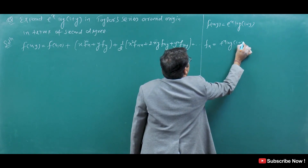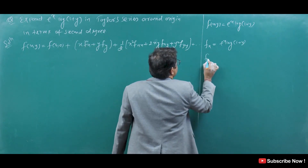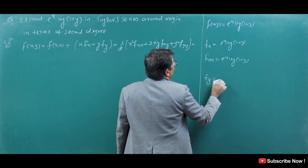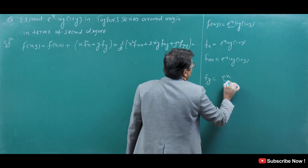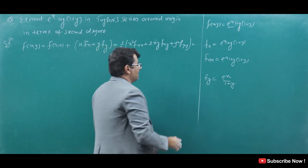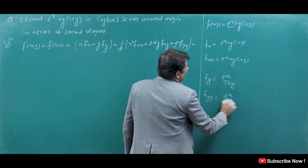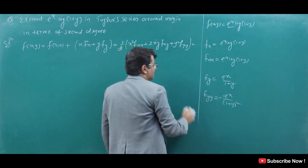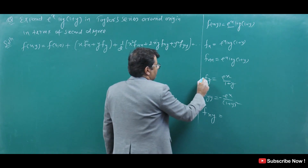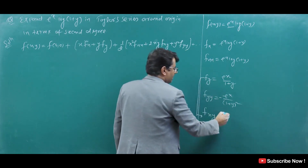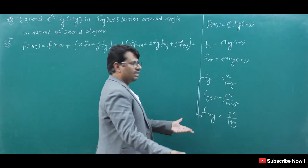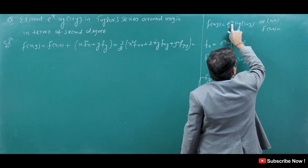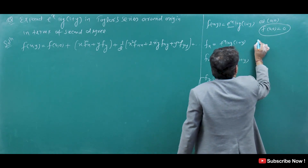Now for f(x,y) = x log(1+y): differentiating with respect to x, e^x — wait, here x is just x, so fx = log(1+y), and fxx = 0 since differentiating log(1+y) again with respect to x gives 0. For fy: differentiating x log(1+y) with respect to y gives x times 1 upon (1+y). For fyy: differentiation of 1/(1+y) gives minus 1 upon (1+y) square.